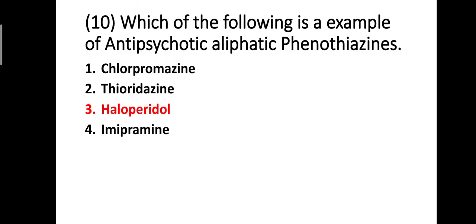Question ten: which of the following is an example of antipsychotic aliphatic phenothiazines? Option one: chlorpromazine, option two: thioridazine, option three: haloperidol, option four: imipramine. The correct answer is chlorpromazine — chlorpromazine is an example of antipsychotic aliphatic phenothiazines.